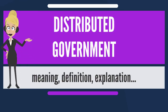A divided government is a type of government in which one party controls the executive branch while another party controls one or both houses of the legislative branch. The situation occurs in governance systems that follow the separation of powers model.